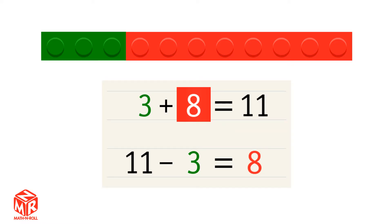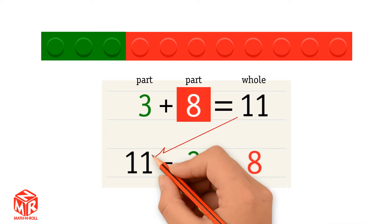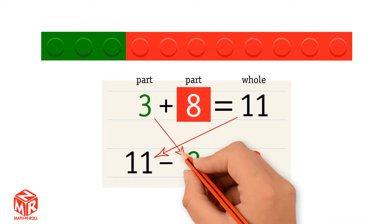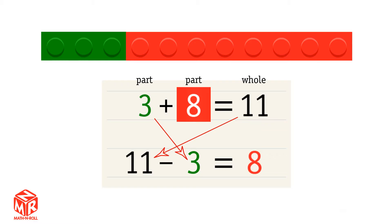3 plus 8 equals 11 is an addition sentence. An addition sentence has two parts and one whole. 3 and 8 are parts and 11 is the whole. To find a missing part, you take the whole and subtract the part that you know. In this example, it was 11 minus 3 to find 8, the unknown number. 3 plus 8 equals 11 and 11 minus 3 equals 8 are related facts.